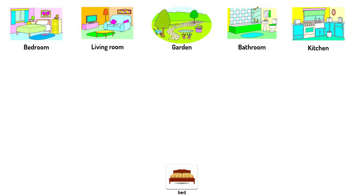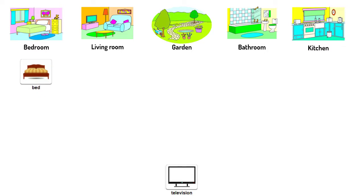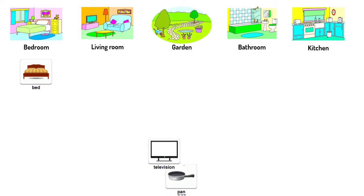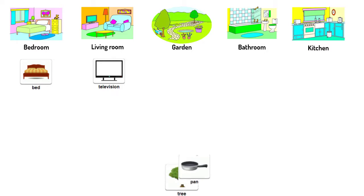For example, I have this bed picture. Where do you think you can find a bed in your house? Yes, that's right — it is in the bedroom, so you place it here. And what about television? The next is pan. Where does it go? It goes in the kitchen here.